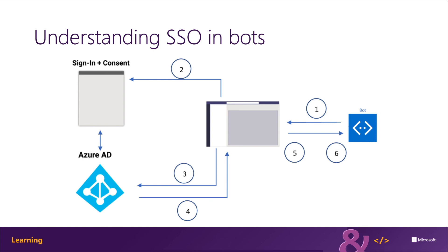They will either need to provide consent if required, or handle step-up authentication such as two-factor auth. In step three, Microsoft Teams requests the bot application token from the Azure AD endpoint for the current user. In step four, Azure AD sends the bot application token back to the Microsoft Teams application. In step five, Microsoft Teams sends the token to the bot as part of the value object returned by the invoke activity with the name sign-in/token exchange. The parsed token includes required information such as the user's email address.